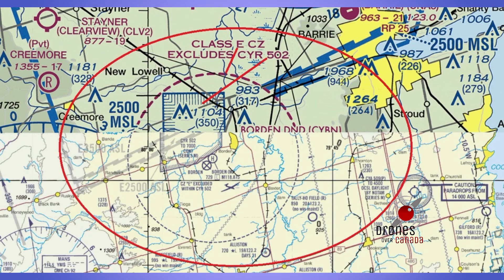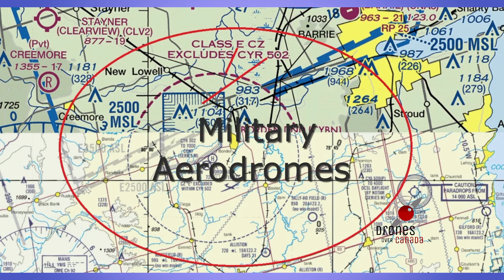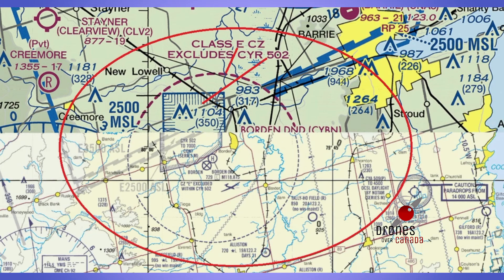As an example of military airspace, I chose Base Borden near Barrie. You'll see a giant red circle — inside that circle is Base Borden, which is both an aerodrome and a military base. The Class E control zone is around the aerodrome, but as you can see it excludes CYR 502, which is Class F restricted airspace. If you look just outside my circle you'll see a few airports depicted: Barrie Air Park to the north, Stayner Clearview, and a private aerodrome called Cremor. For more detail on those airports, have a look at our next video on the Canada Flight Supplement, which can also be accessed for free using flightplan.com.